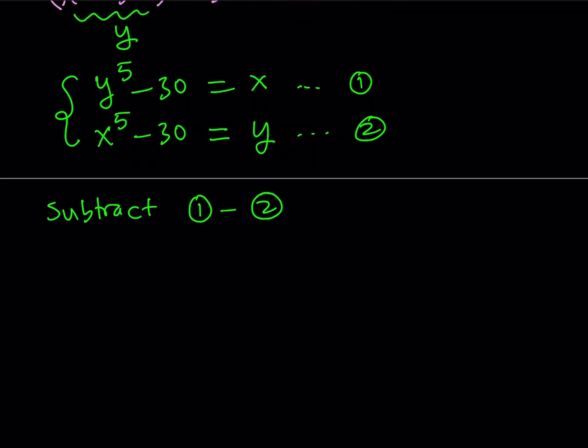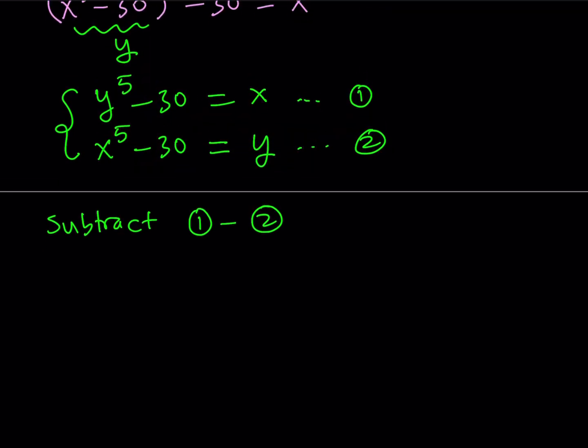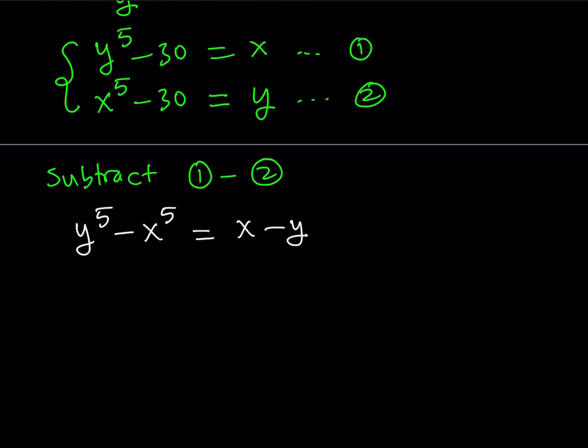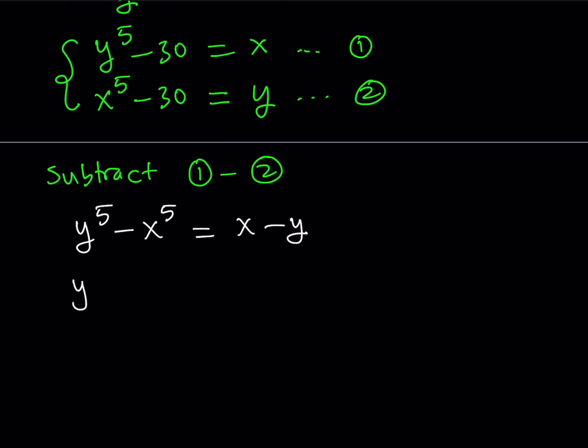So when we subtract those equations, obviously negative 30 minus negative 30 is going to be zero. So they're going to cancel out and we're going to end up with y^5 - x^5 = x - y. Now, I don't like the x - y on that side. Let's put everything on the same side. So we get y^5 - x^5 + y - x = 0.